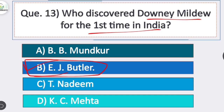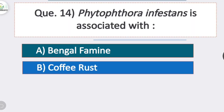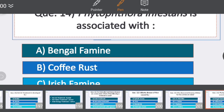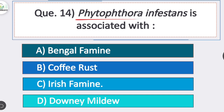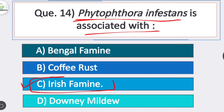Anton de Bary described the life cycle of downy mildew fungi for the first time. Question 14: Phytophthora infestans is associated with? Option C is correct — Irish famine. Phytophthora infestans causes late blight of potato, and the disease was responsible for the Irish famine.